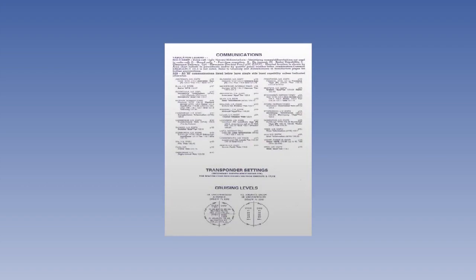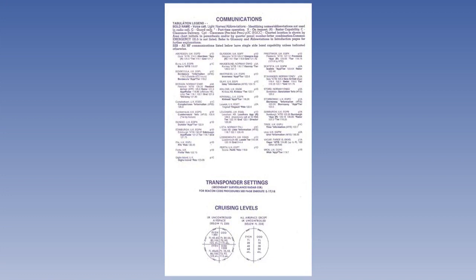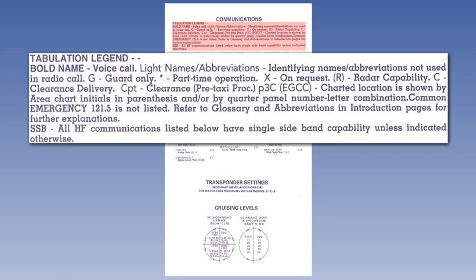Now turn the chart to reveal the next panel down. The major portion of this panel concerns radio communications, including location, call sign and frequency. It is strongly recommended that before you move on to the next scene, you read carefully the notes under the heading tabulation legend.